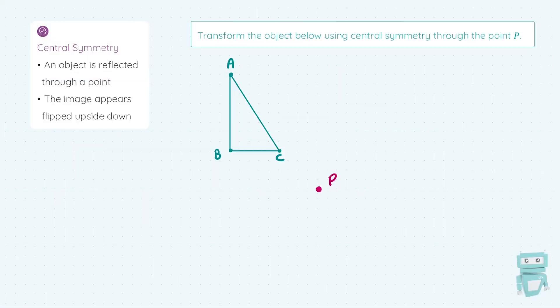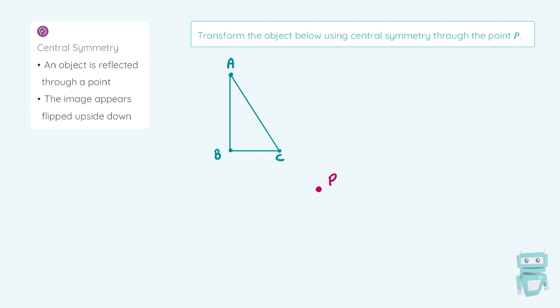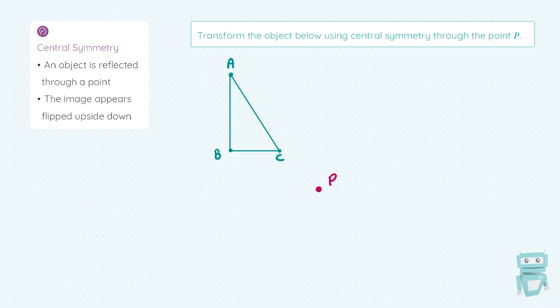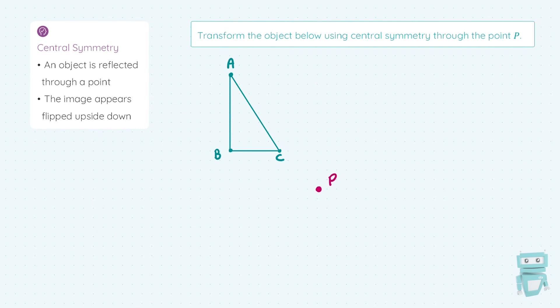Hey there, it's Stephen here with StudyClix, and in this video we're going to look at central symmetry. Central symmetry happens when an object is reflected through a point, and the image of this object appears flipped upside down when we do this. So let's see it in action. I'm asked to transform the object below using central symmetry through the point P — basically, take this triangle and transform it through the point P using central symmetry.